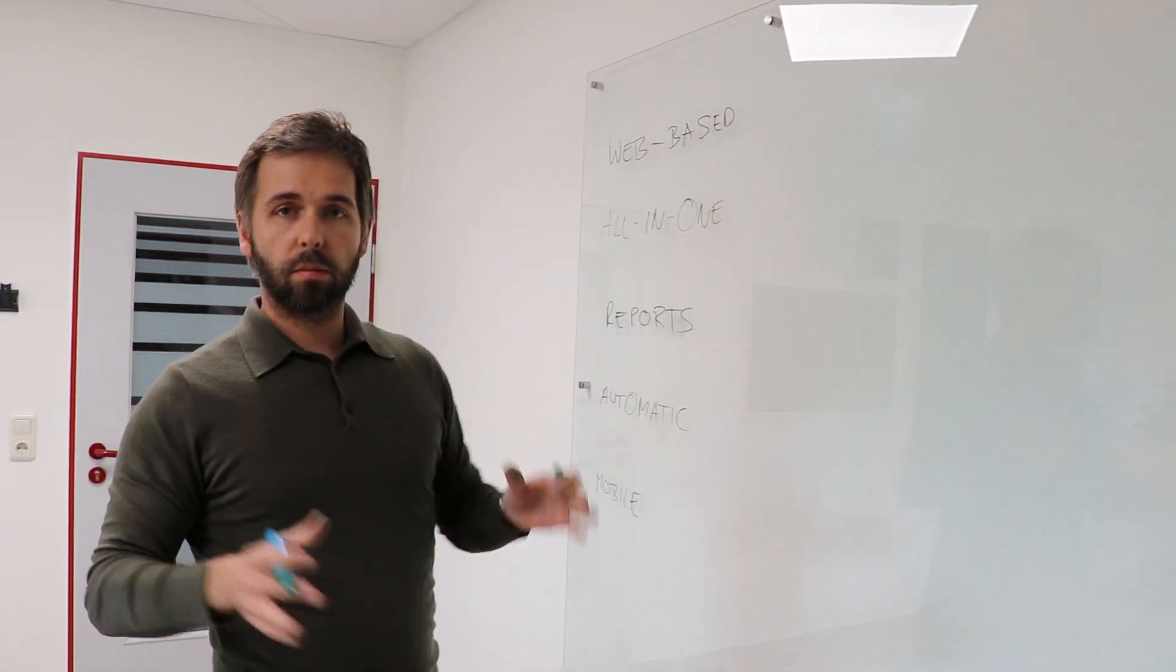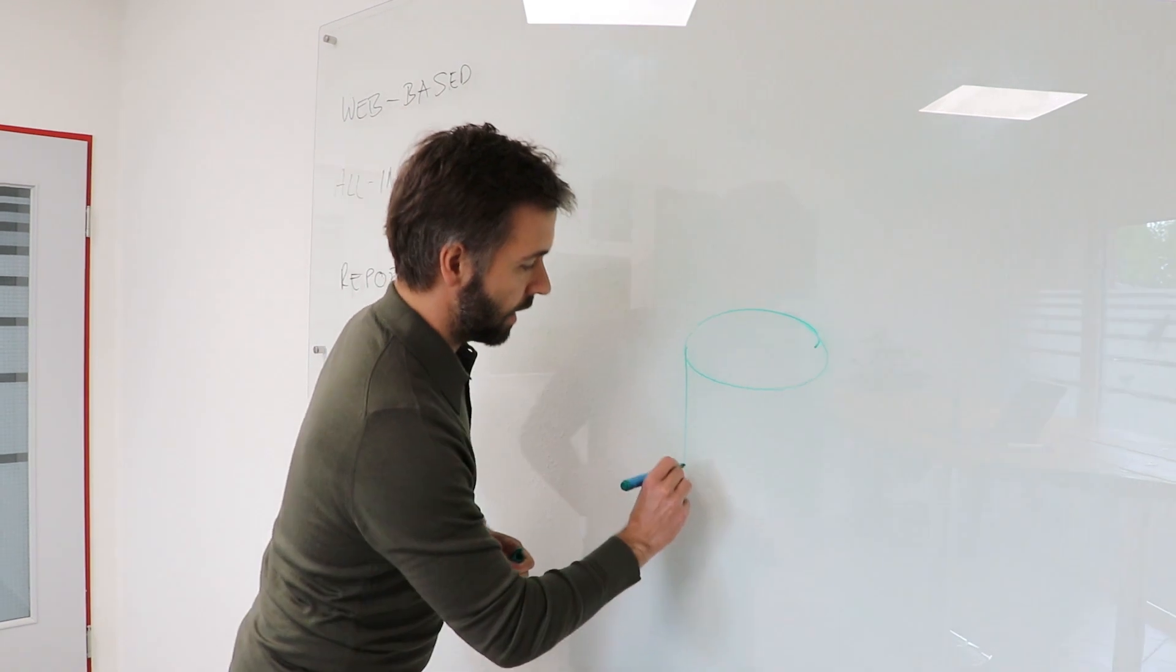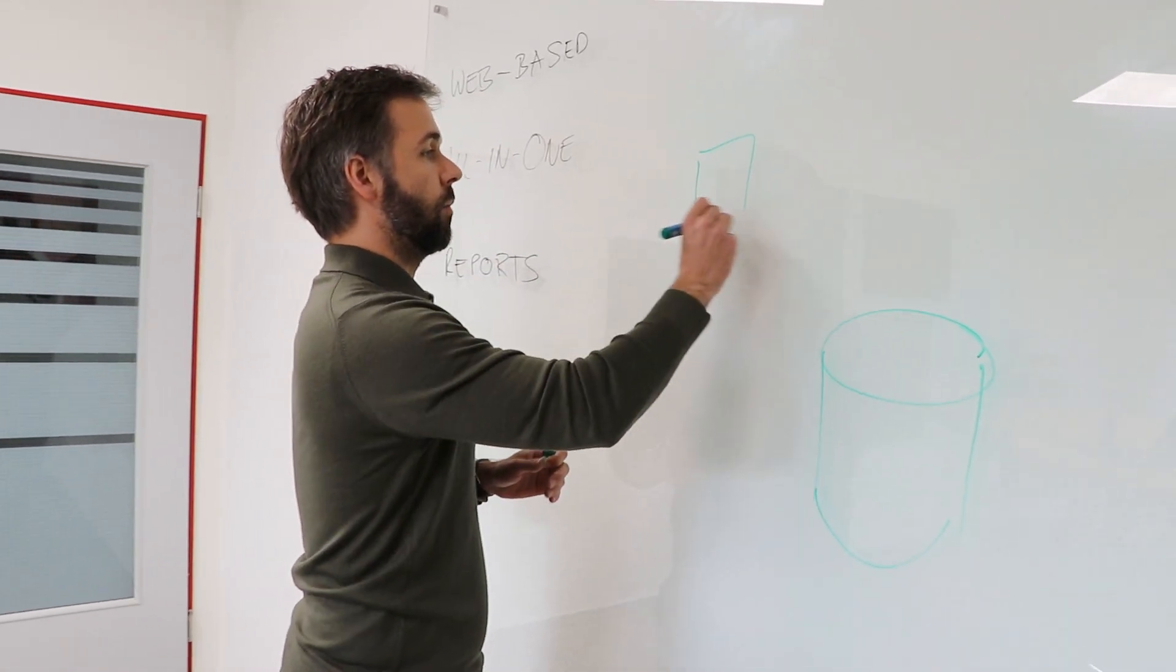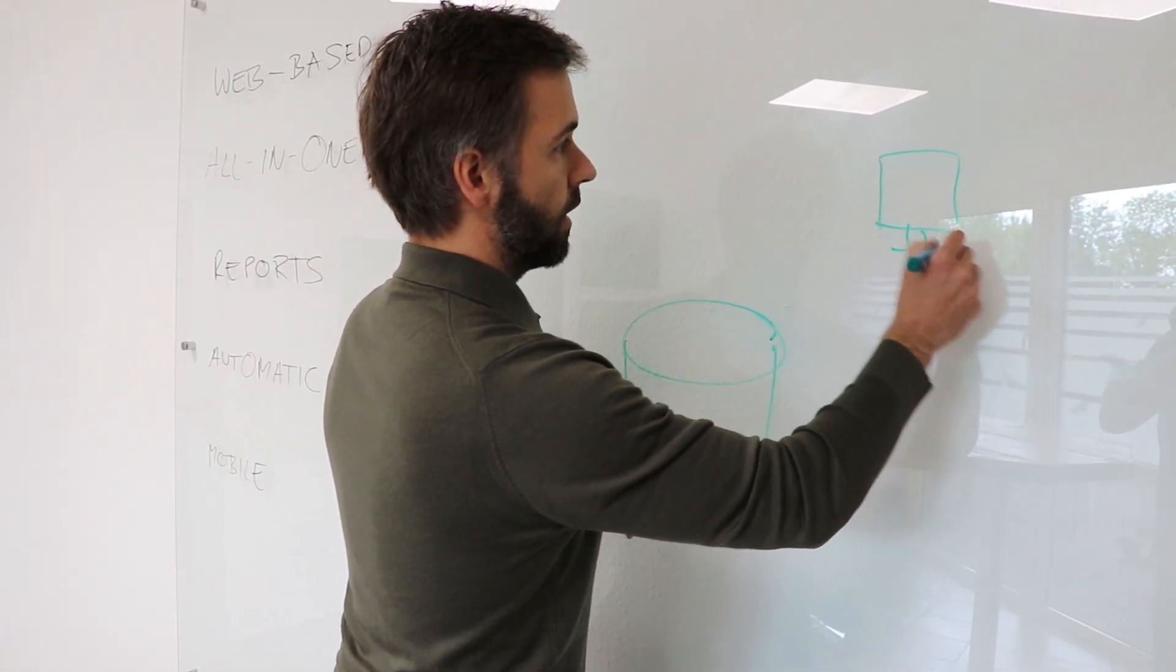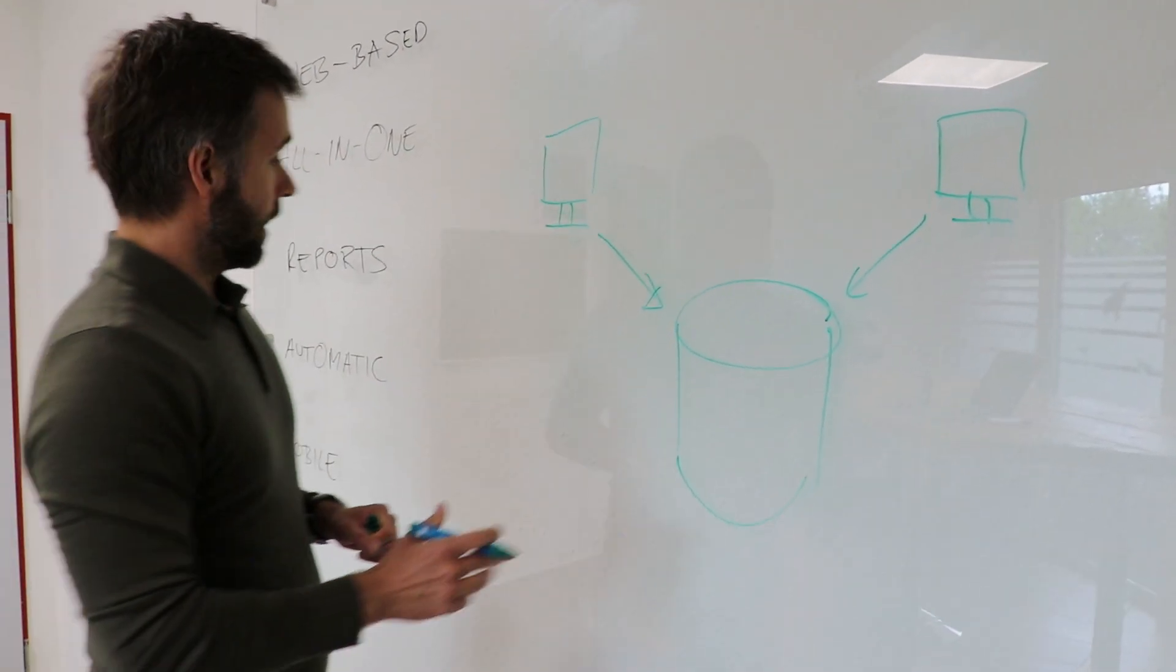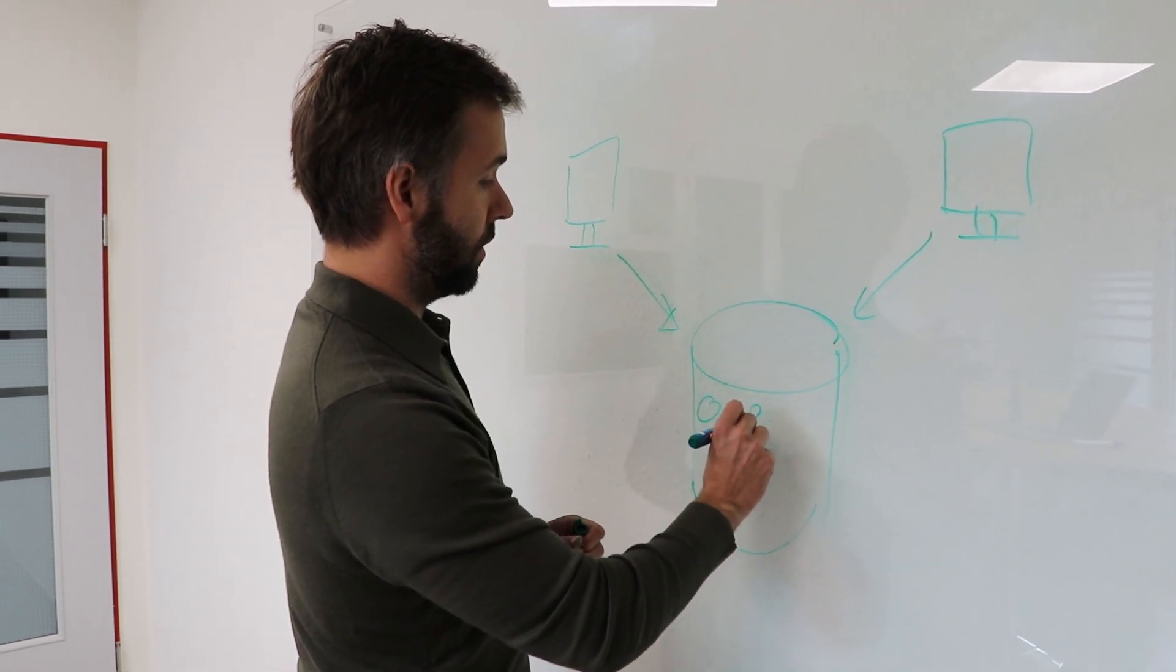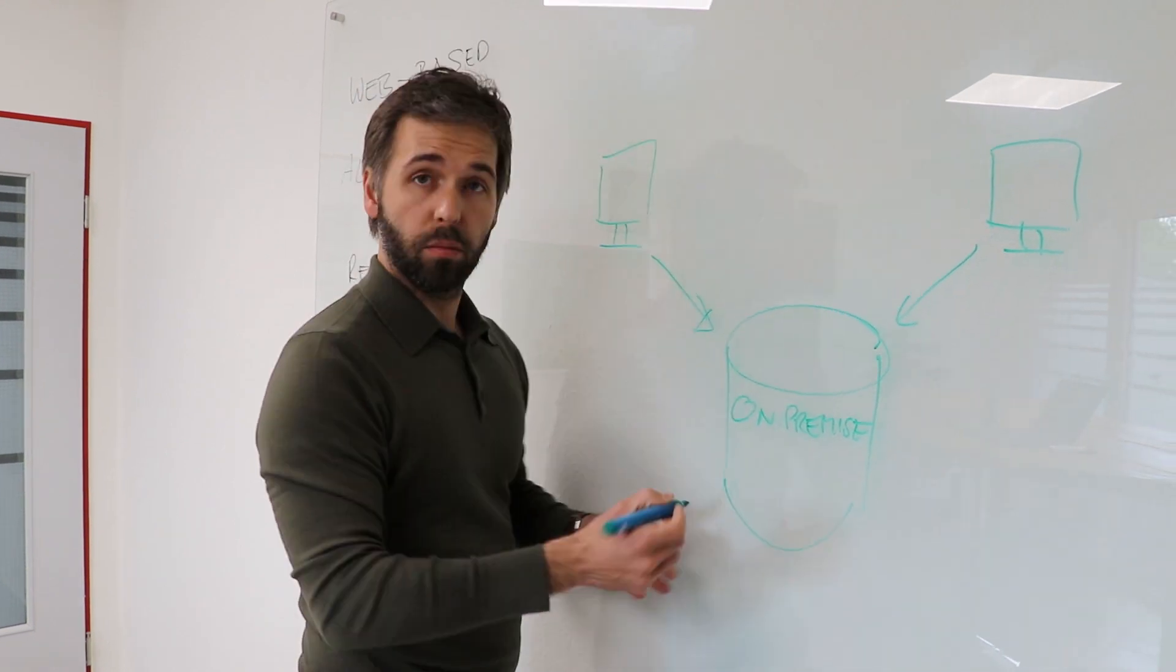If we start with the system architecture, our software is a server-based software. We have our server that sits somewhere, and from any computer that's in the same network, you get a nice little GUI and you can operate our software. Where this server sits doesn't actually matter - it can be on premise or it can be in the cloud.